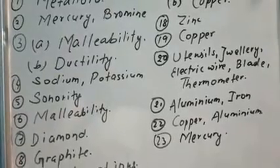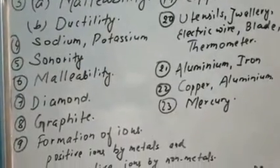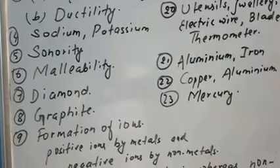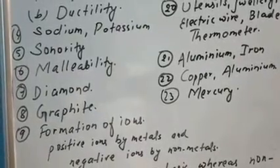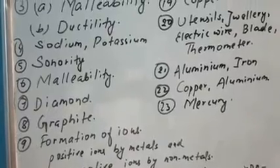Number five: if a metal coin is dropped on hard floor it produces a ringing sound. What is this property of metal known as? This is called sonorous property, so we may call it sonority.